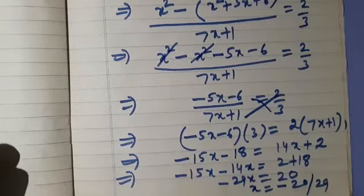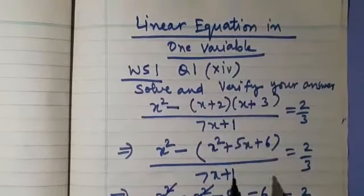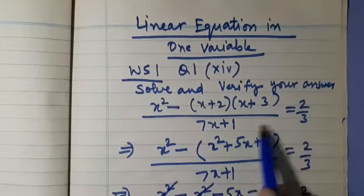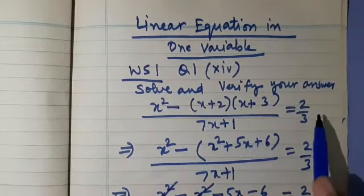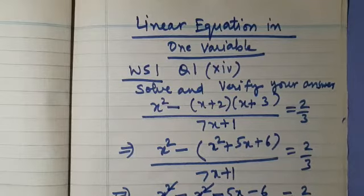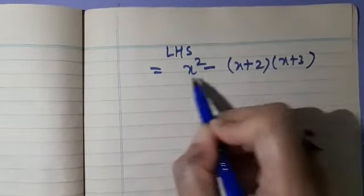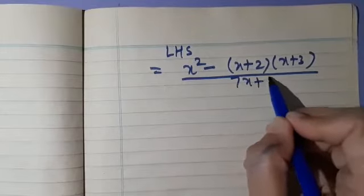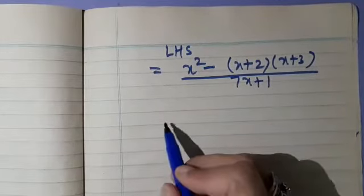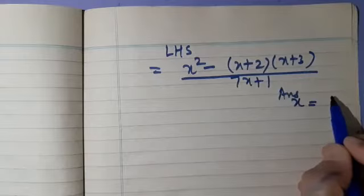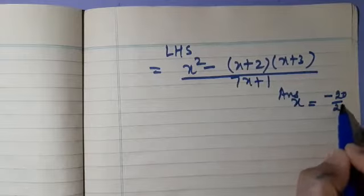Here we also have to verify this answer. We will substitute x equals minus 20 upon 29 on the left hand side, simplify it, and check whether we get 2 by 3 or not. The left hand side is x² minus (x plus 2)(x plus 3) divided by (7x plus 1), and we have the answer x equals minus 20 upon 29.